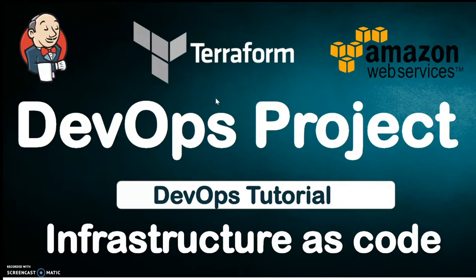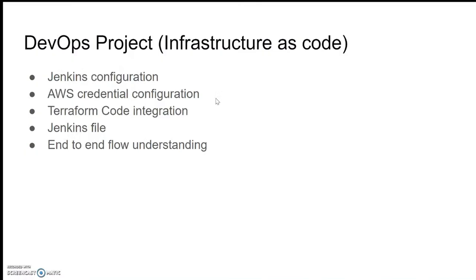Things we are going to cover in this session: Jenkins configuration — what things we have to configure in Jenkins using the Jenkinsfile. Next, we configure the AWS credentials — how to take the AWS credential from AWS IAM and how to store the same credential in Jenkins. Then we'll cover the Terraform code integration part, going through Terraform commands like init, plan, and apply. At last, we'll see the full end-to-end flow using Jenkins, where we'll trigger our job and deploy our EC2 instance in AWS.